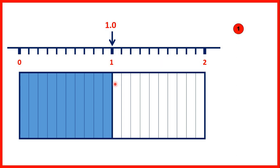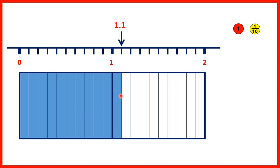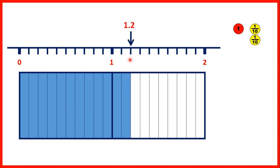If we carry on counting, we have 11 tenths, which is the same as one whole rectangle and one tenth of another one, so that's 1.1. Now we have 1.2.